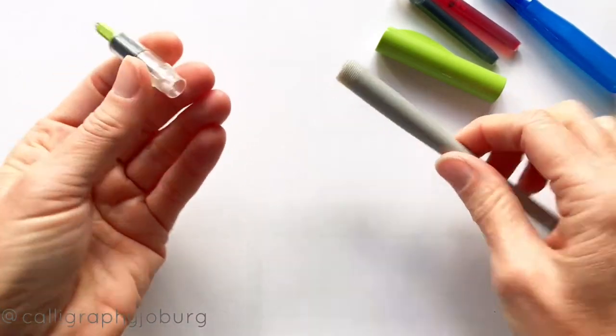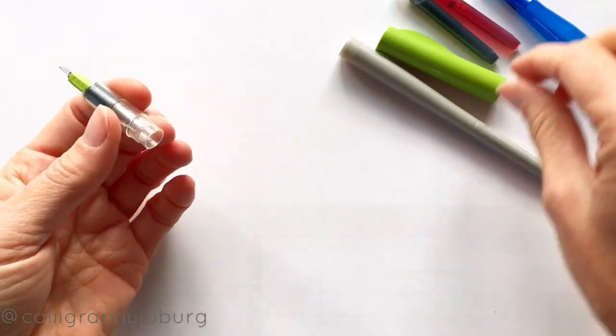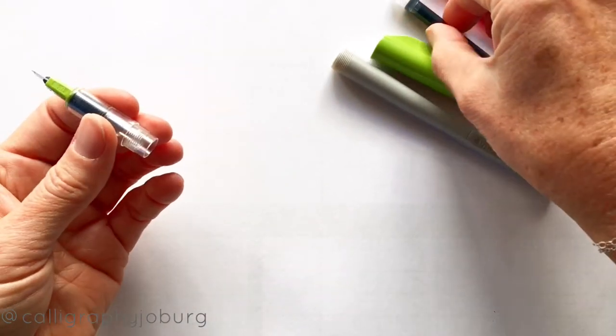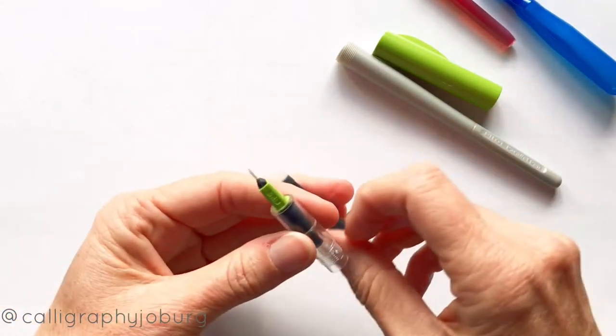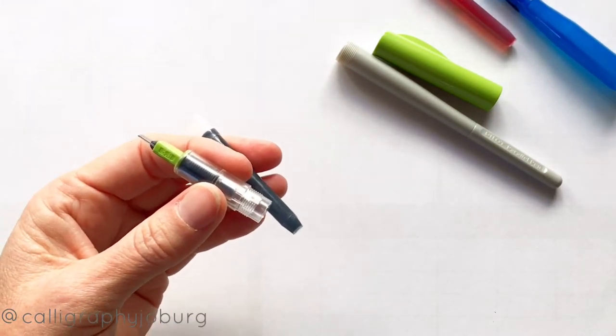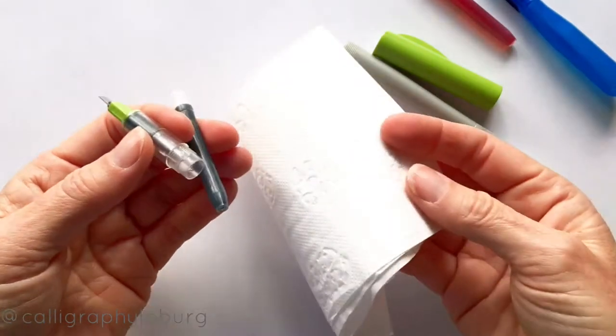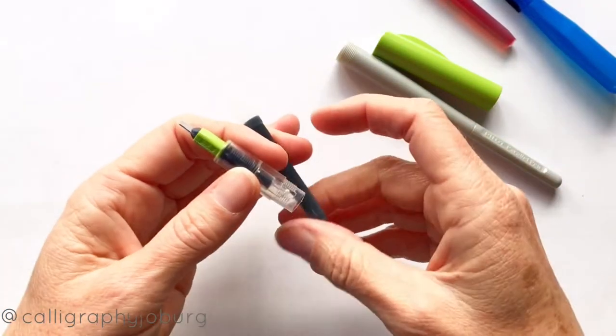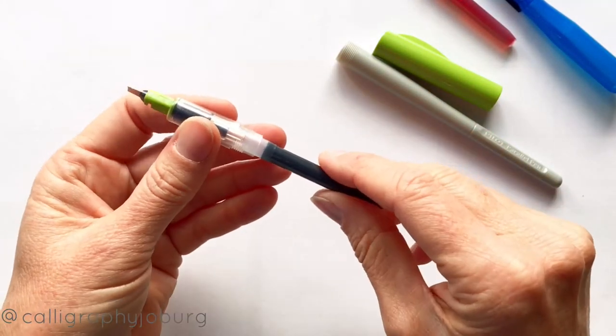So when you get your pen, first of all unscrew the back and decide which color ink you want to put in. I'm going to be putting in a black cartridge. Always make sure that you've got a little bit of either toilet paper or tissue with you and that's in case you have a little bit of an ink spill. So I've got some here with me. I'm going to put the cartridge in the back.